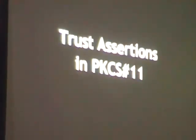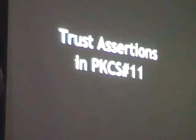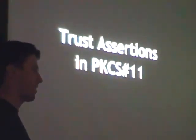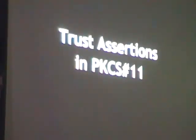So how does this help us share trust decisions — help the user see a consistent, predictable, principle-of-least-surprise set of trust decisions from all these different applications and crypto libraries? What we've done is store trust assertions in PKCS11, just like certificates and keys are stored in PKCS11. We store trust assertions as one object per trust assertion. They don't necessarily have to be stored on the same token as the subject they are representing. Each one has a class and different types — kind of like public keys in PKCS11.